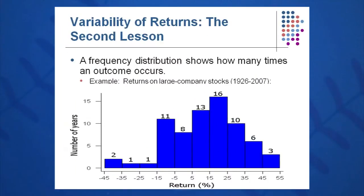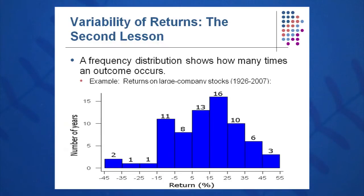We can take all of the returns captured by Ibbotson and Sinkfeld and put them into a histogram or frequency distribution — how frequently do these same returns occur under bands like zero to ten percent, ten to twenty percent, twenty to thirty percent, and so on, going negative as well. I like to call this a bucket diagram or histogram.